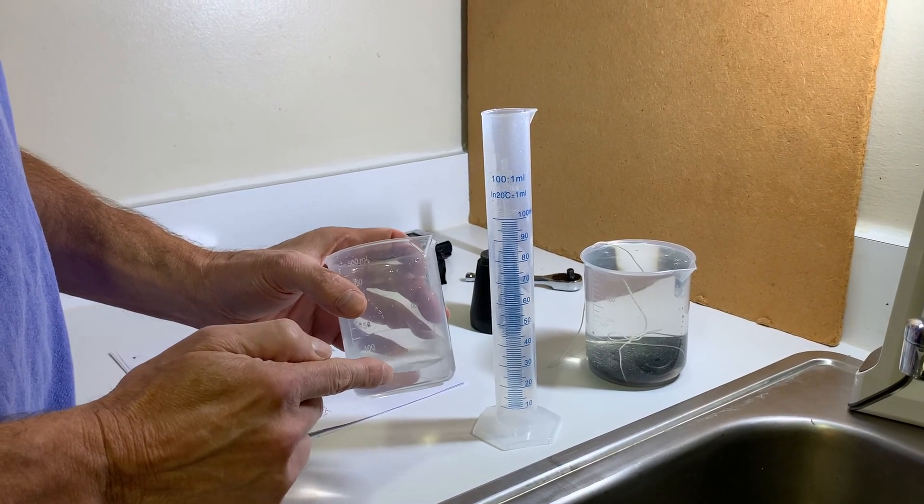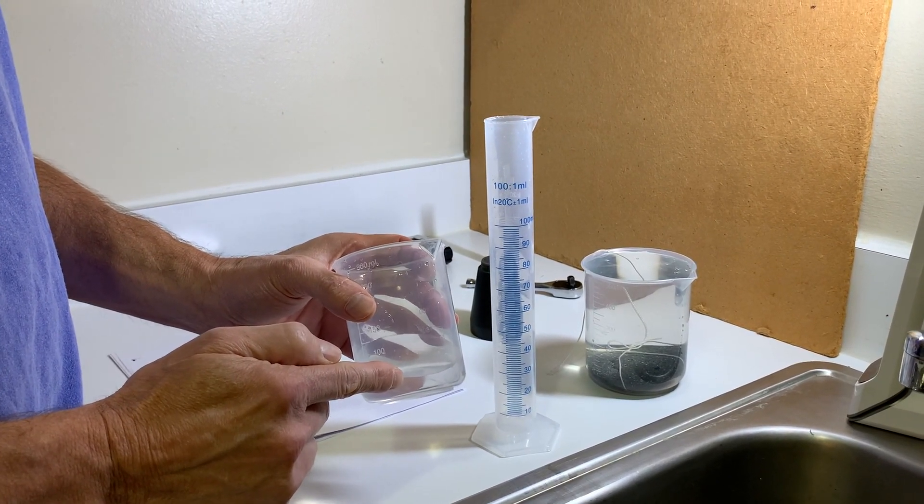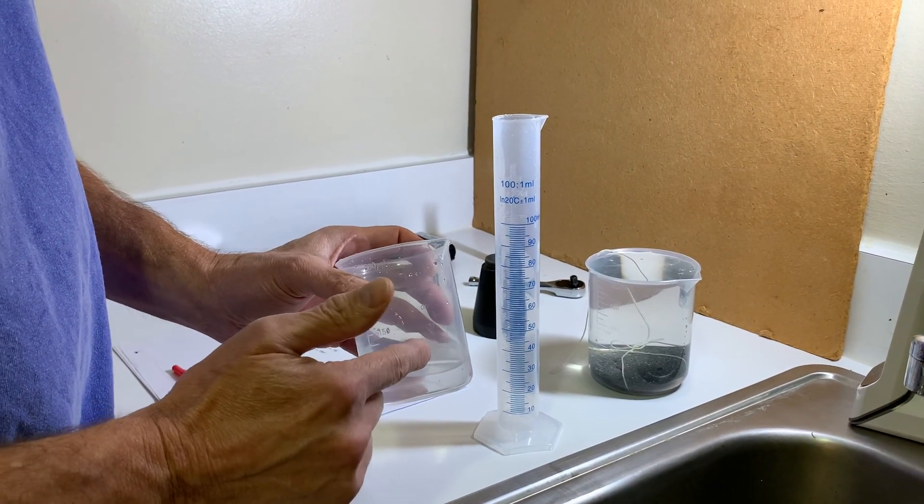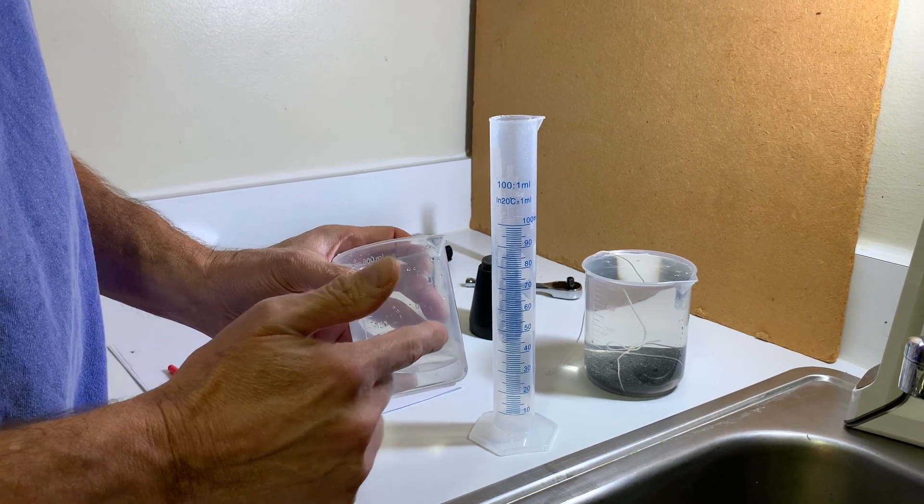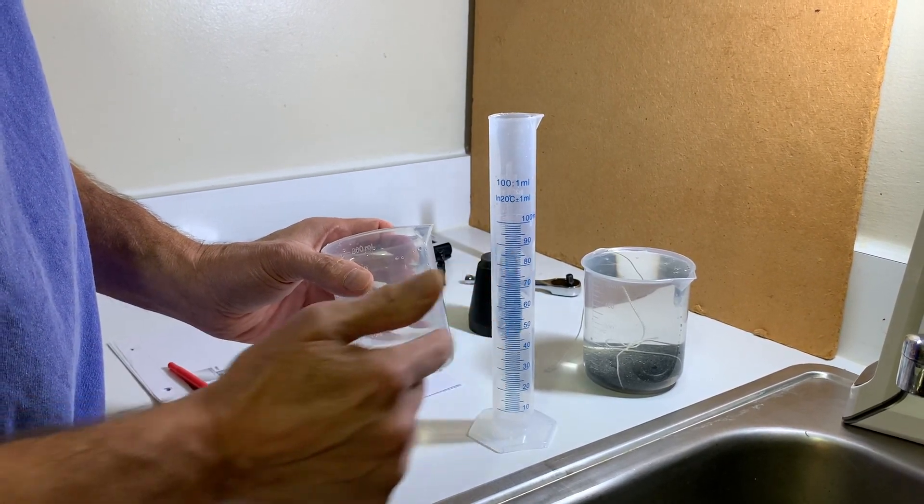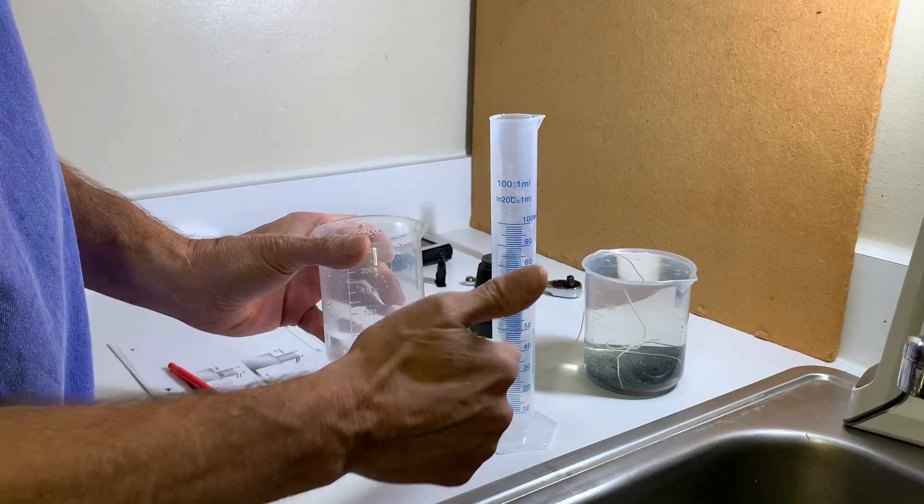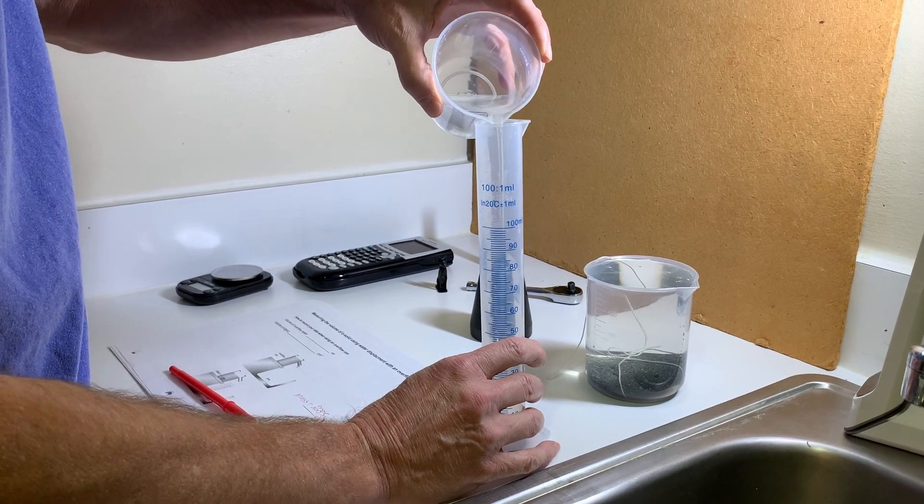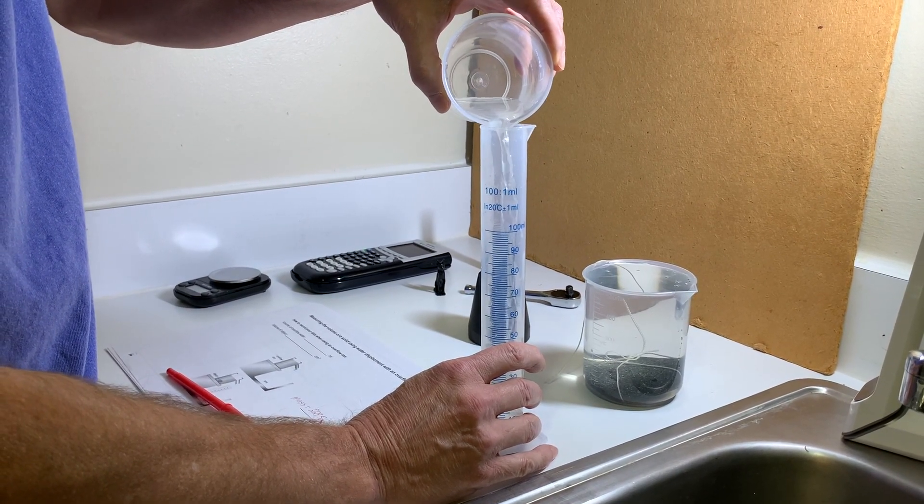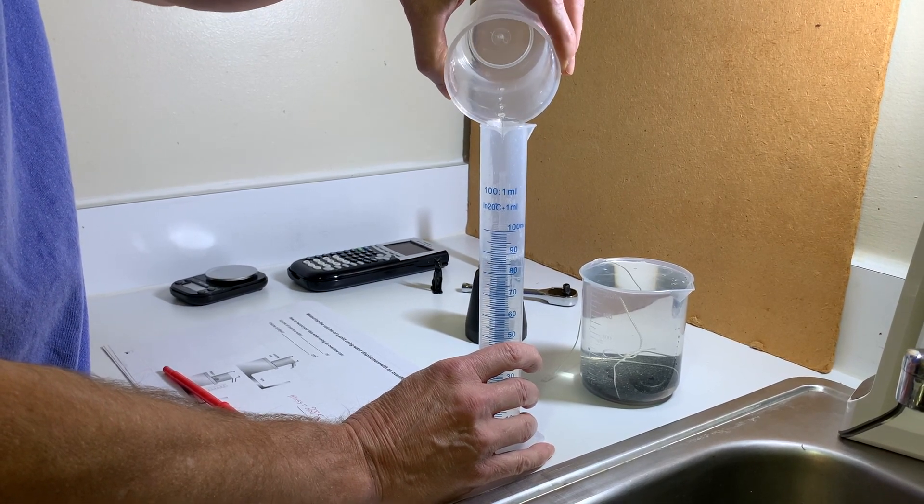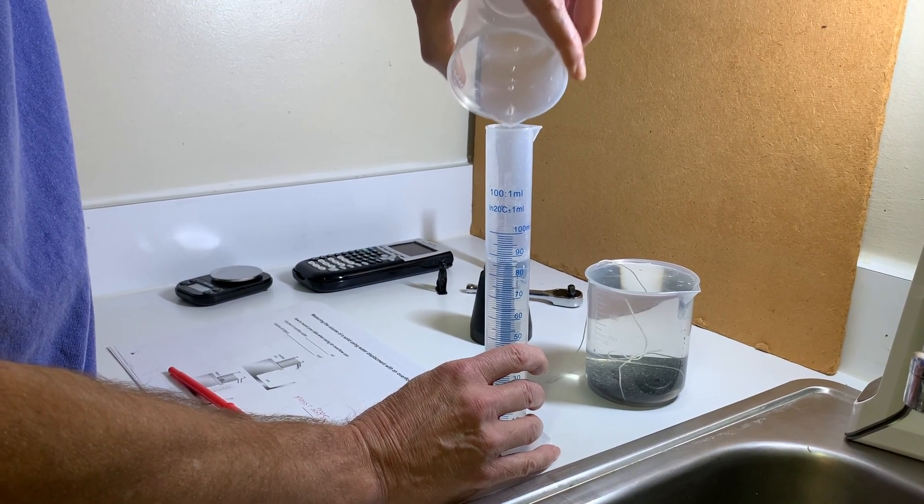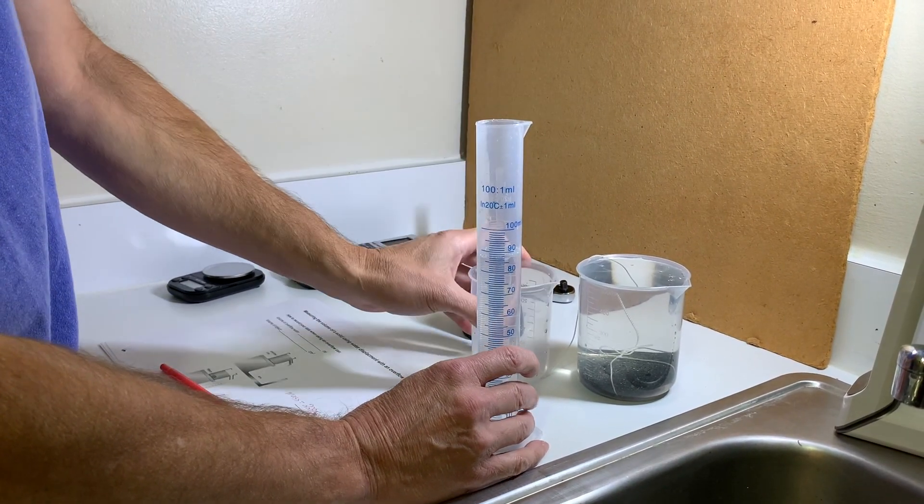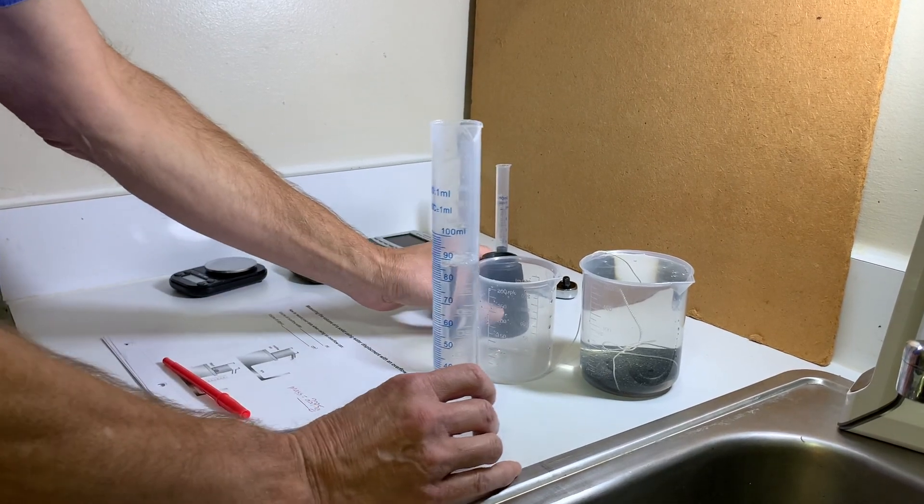So now we need to find the volume of this water that overflowed because that's going to be the same volume as the volume of the rock. However, we know that the beakers are not very accurate, so we'll need to pour this water into the graduated cylinder. I can see it's a little under 100 milliliters, so this would be the best one to use. I'm going to try to carefully pour it in. We definitely don't want to lose anything. And we want to get it all, but hopefully a few drips won't matter.